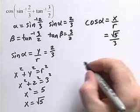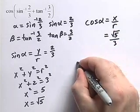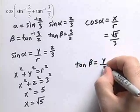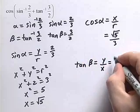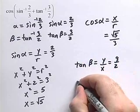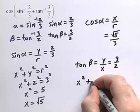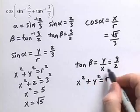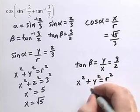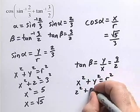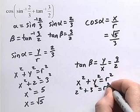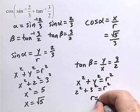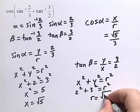Now we're going to work on beta. We know that tangent of beta is equal to y over x — in this case, 3 halves. Consider a circle of the form x squared plus y squared equals r squared. In this particular case, y is 3 and x is 2, so we have 2 squared plus 3 squared equals r squared. Solving for r, we get r is equal to the square root of 13.